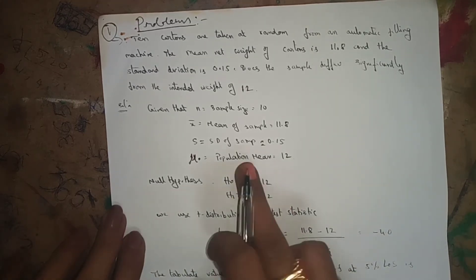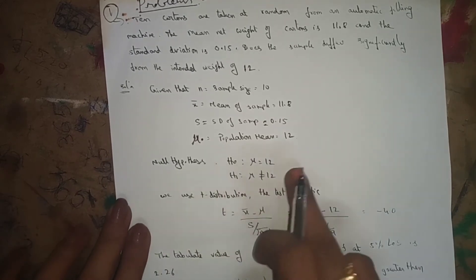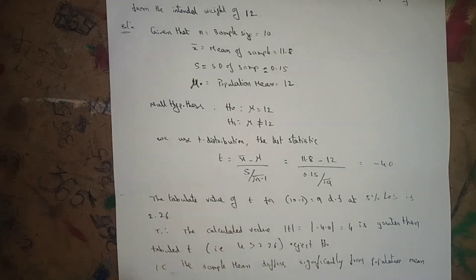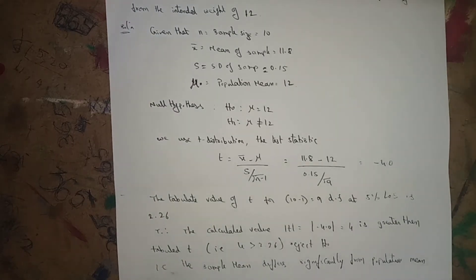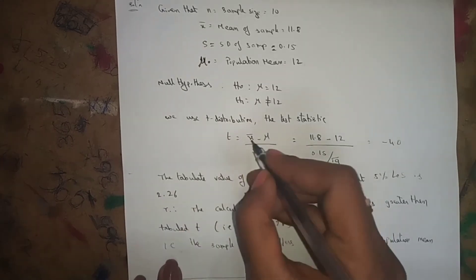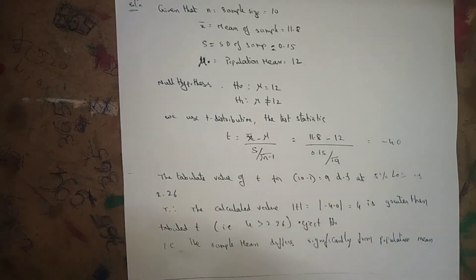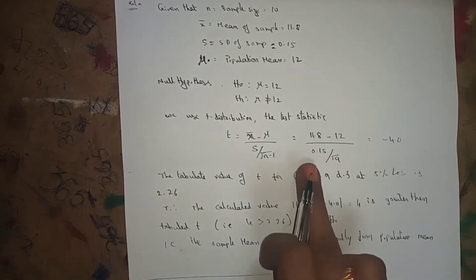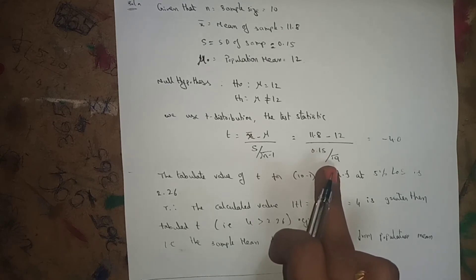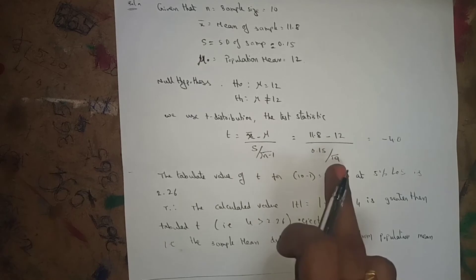We set null hypothesis H₀: μ = 12. We use t-distribution because the sample size is less than 30 and we know the sample standard deviation. The test statistic is t = (x-bar − μ) / (s / √(n−1)) = (11.8 − 12) / (0.15 / √9), where √(10−1) = √9 = 3.